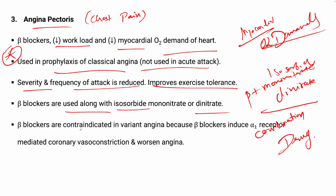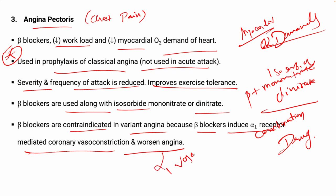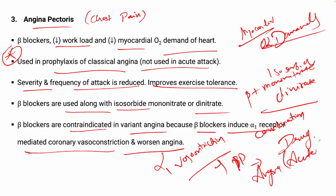Beta blockers are contraindicated in variant angina because beta blockers induce alpha-1 receptor mediated coronary vasoconstriction and worsen angina. Since alpha-1 leads to vasoconstriction, it increases blood pressure and there are higher chances of acute angina. So beta blockers are contraindicated in variant angina.